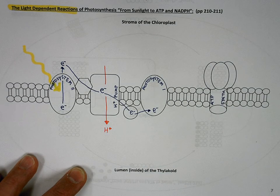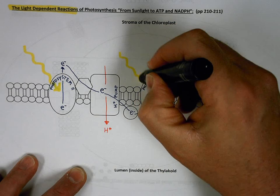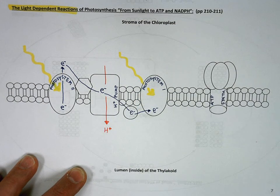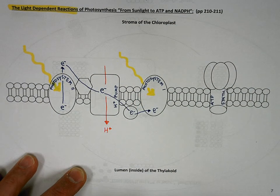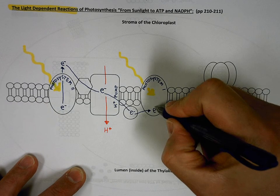When light strikes photosystem one, that electron is excited again.